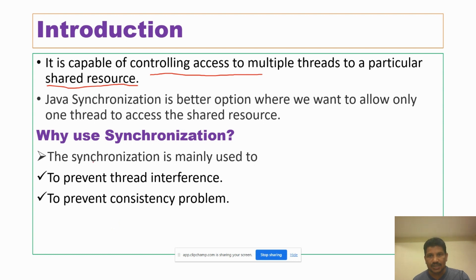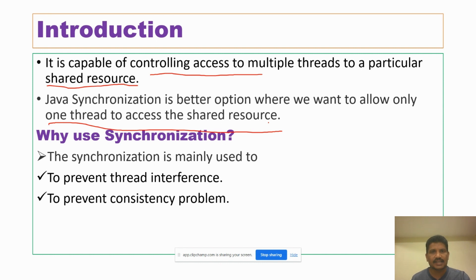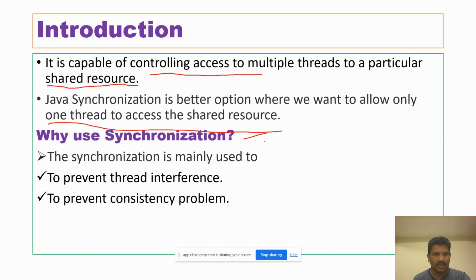Synchronization ensures that only one thread can access the shared resource at a time. If two or more threads try to access the shared resource at the same time, the data may be corrupted or inconsistent, which may produce a wrong result. To overcome that problem, we use synchronization, which allows only one thread to access the shared resource at a time.